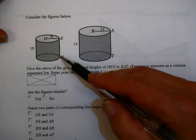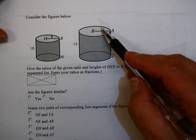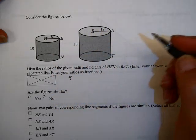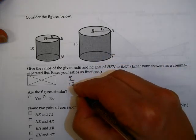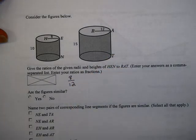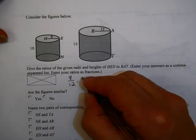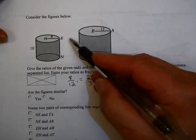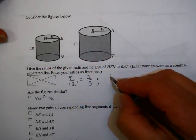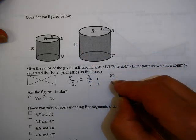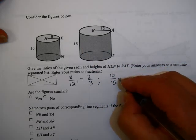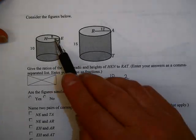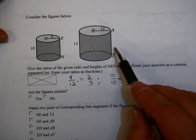Give the ratios of the given radii heights HEN to RAT. So, if we look at the ratio of the radii, the radius here is eight, and the radius here is twelve. Of course, we could reduce that fraction to two-thirds. And on this one, when we look at the heights, the ratio here is ten, and the ratio here is fifteen. And again, we could reduce that factor to two-thirds. Since these ratio of corresponding parts are the same, that means the triangles are similar.